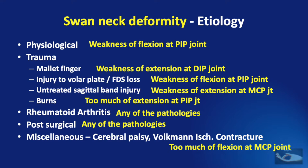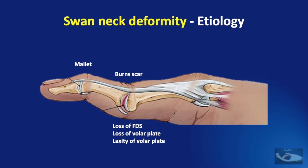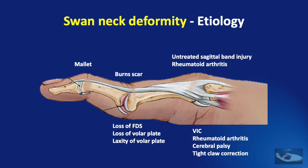Summing up, the swan neck deformity could be caused by: loss of extension power in a mallet injury; too much extension power at the proximal interphalangeal joint in a burn scar; weakness of flexion at the proximal interphalangeal joint in conditions like loss of the FDS, loss of the volar plate, or laxity of the volar plate; weakness of extension at the metacarpophalangeal joint due to an untreated sagittal band injury or rheumatoid arthritis; or increasing flexion at the metacarpophalangeal joint due to ischemic muscle contracture or tight claw correction.